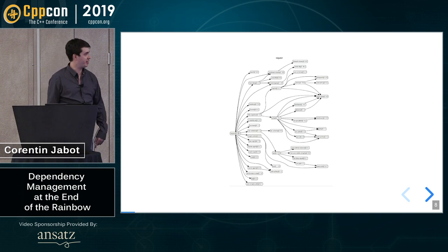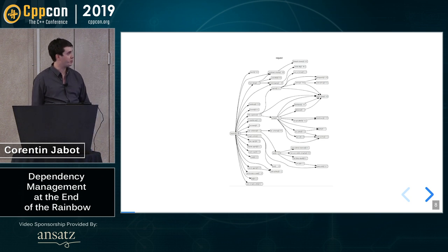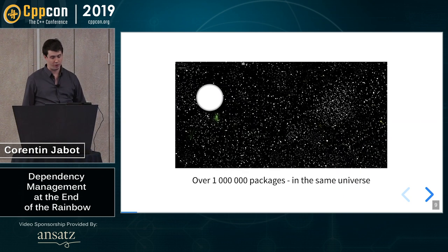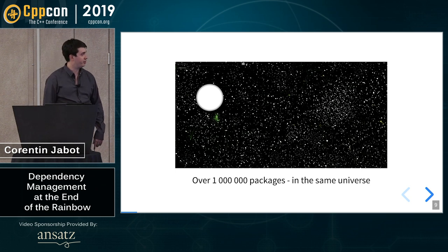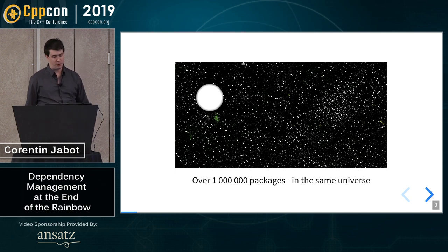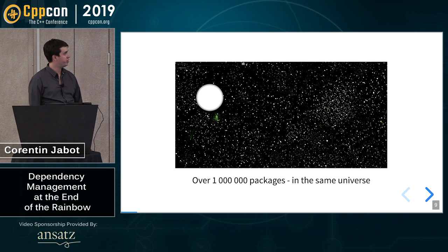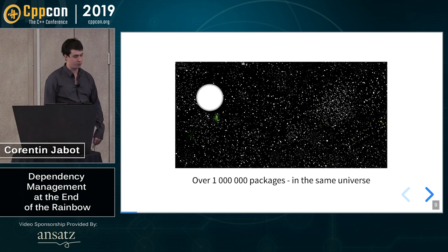In the NPM ecosystem, there are over a million dependencies, and people have been willing to visualize that ecosystem.